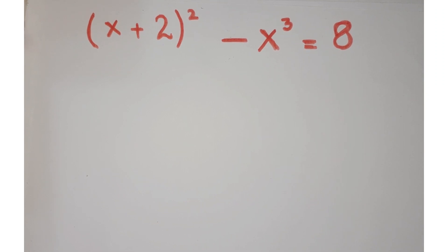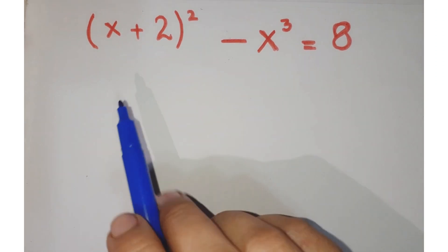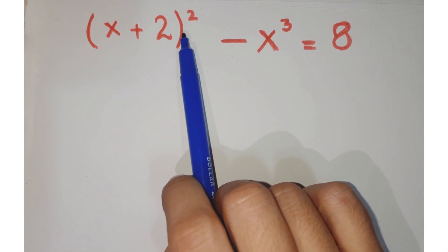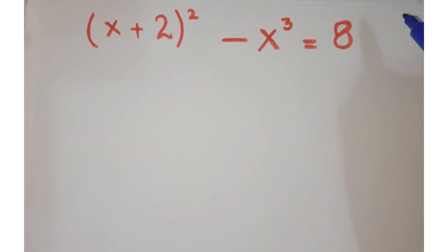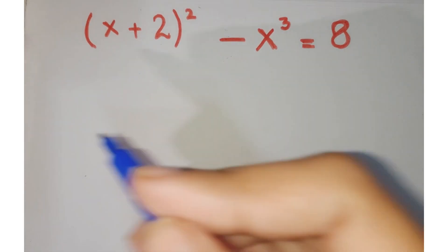Hello friends, welcome to the learning curve. Now look at this exponential equation: (x+2)² - x³ = 8, and we have to find the value of x.